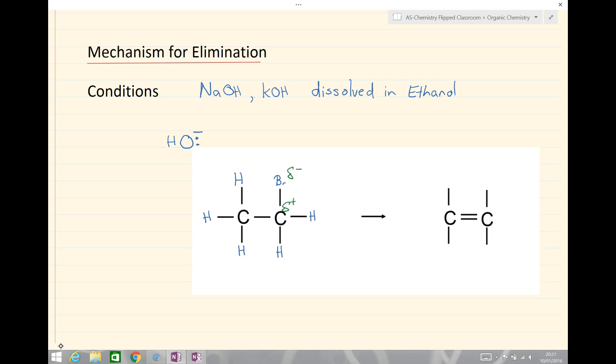This time the hydroxide ion that forms from the sodium hydroxide or potassium hydroxide, instead of attacking the delta positive carbon, when it's in ethanol we get an attack of the hydrogen and therefore it's acting as a base. The bond from the hydrogen...